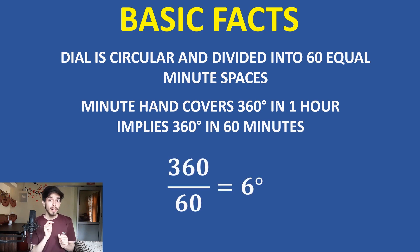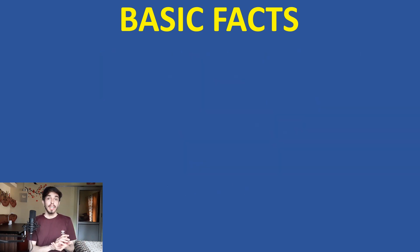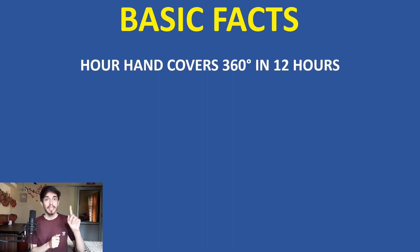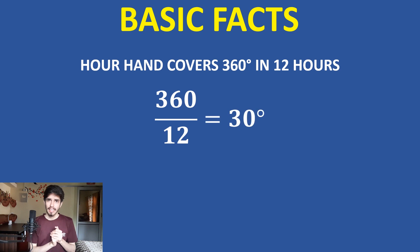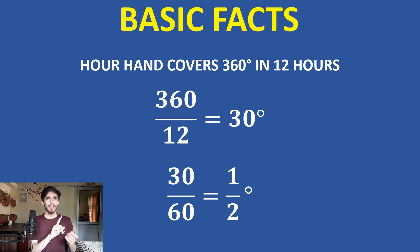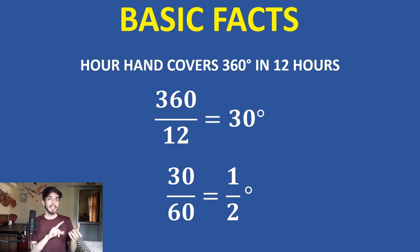So the minute hand covers 6 degrees in one minute. In 12 hours, the hour hand covers 360 degrees, so in one hour it covers 30 degrees. Dividing by 60, every minute it covers half a degree. So: minute hand covers 6 degrees per minute, and the hour hand covers half a degree per minute. Keep these in mind — if you forget, just calculate from basics by looking at the clock.